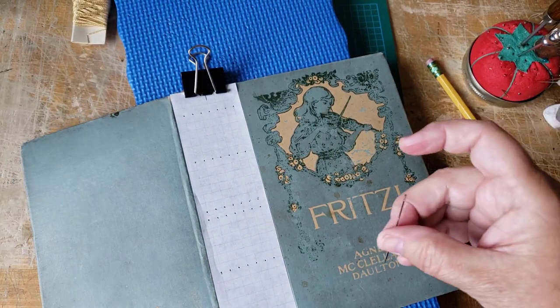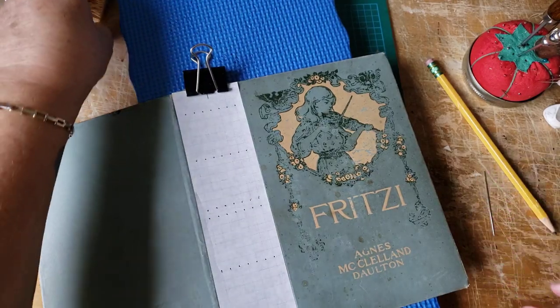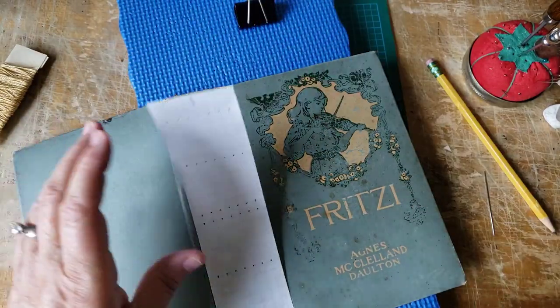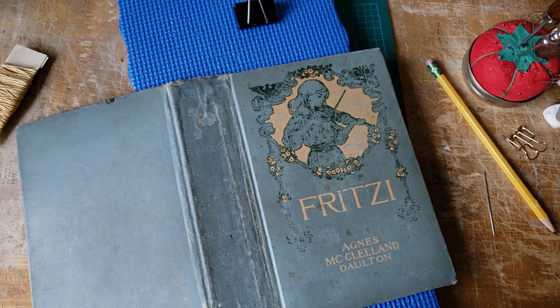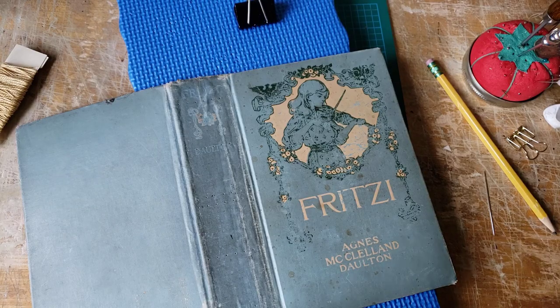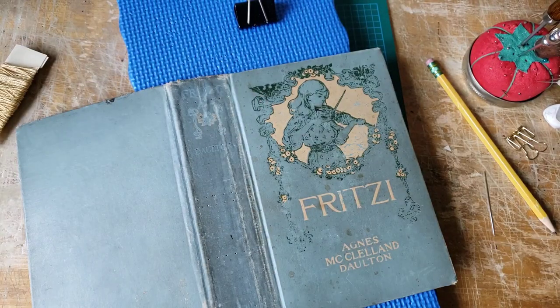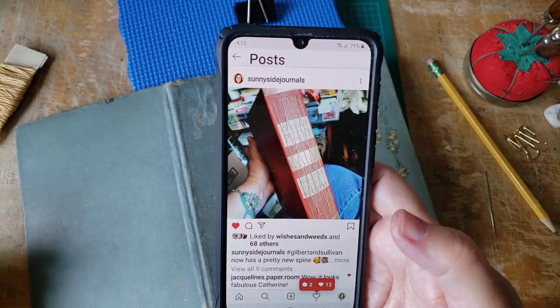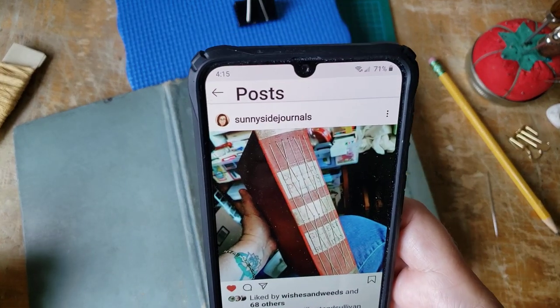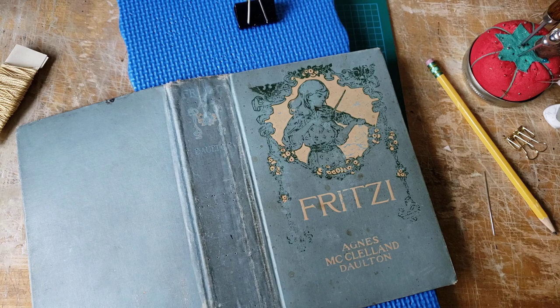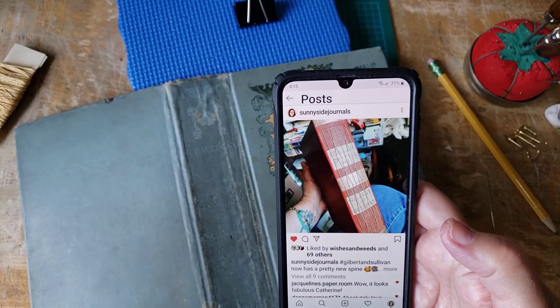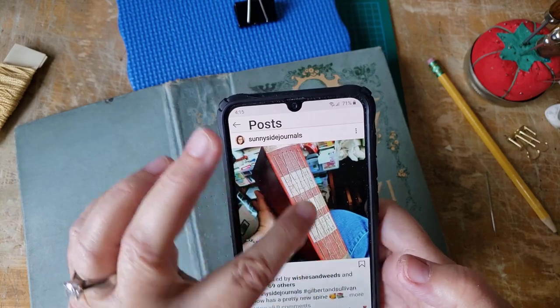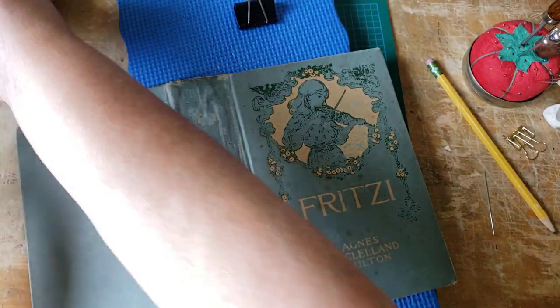I'm actually maybe going to use that thread. I'm going to use this. And now I have to remember how I did the stitching. Let me find it. I'm going to keep this photo handy. I go straight down one side, X, straight down, X. Okay, let's try.